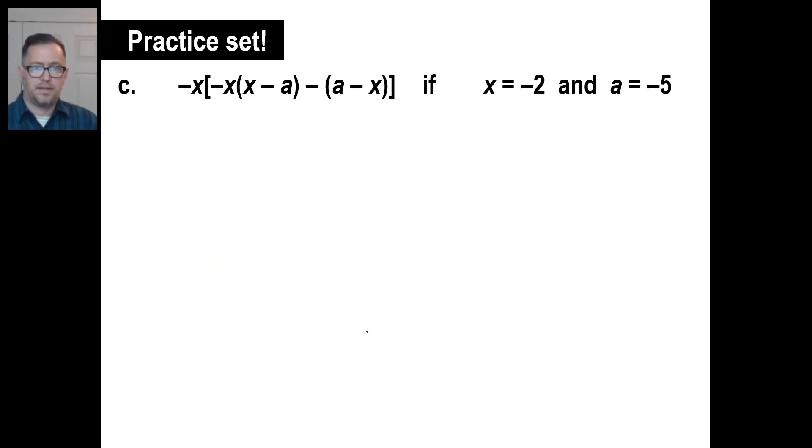Try C. Copy that down. Pause it and give it a whirl and come back when you're finished. All right, a little bit longer, but very doable. Just do the same thing over and over. The opposite of x, if x is negative 2, is 2. And again, it's still 2. And I have a regular old x this time, which is negative 2. Then I have the opposite of a, which will be the opposite of negative 5, which will just be 5. Minus. Notice I'm carefully copying these things down the best I can. A is negative 5. The opposite of x will be plus 2. And in the bracket.